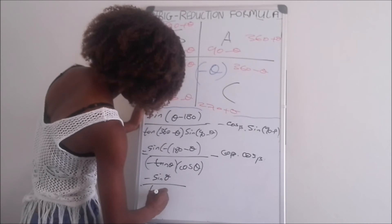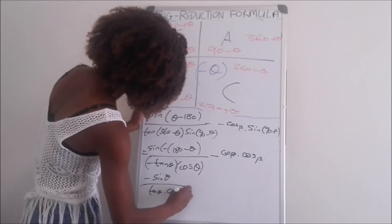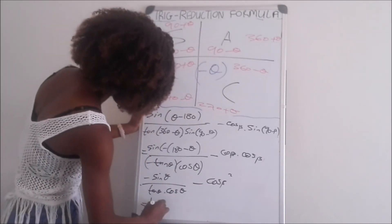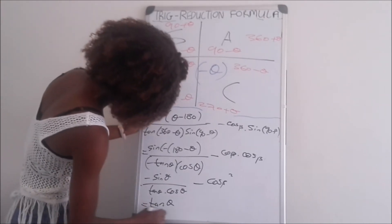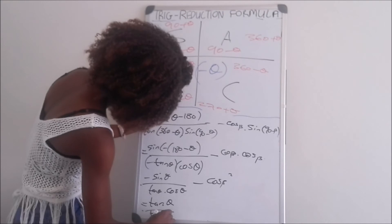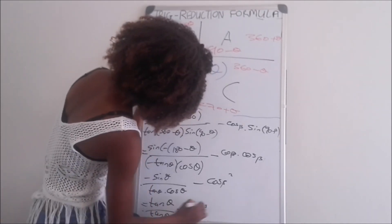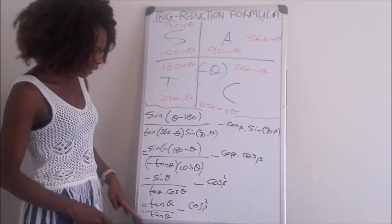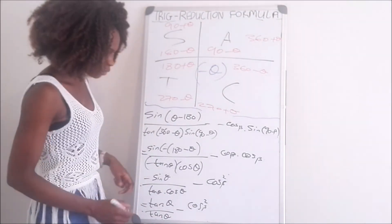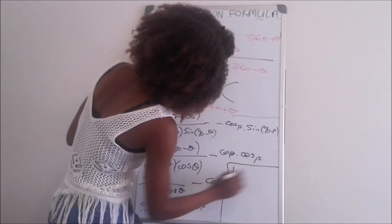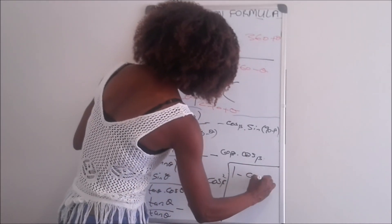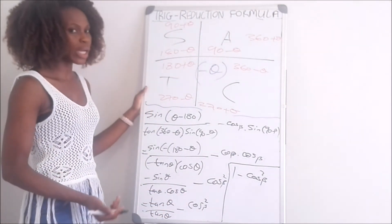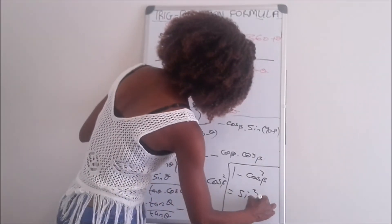Divided by tan theta, multiplied by cos theta, minus cos squared beta. Since sine divided by cos equals tan, we get tan theta divided by tan theta, minus cos squared beta. Tan divided by tan equals 1, leaving us with 1 minus cos squared beta. Using the trigonometric identity, 1 minus cos squared beta equals sine squared beta.